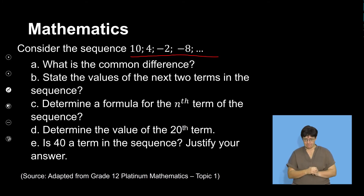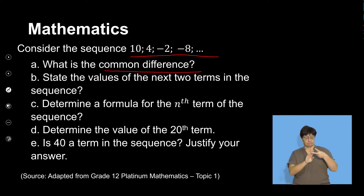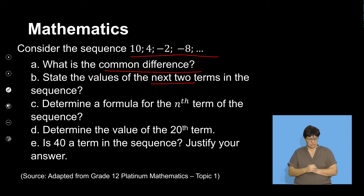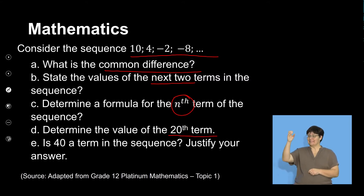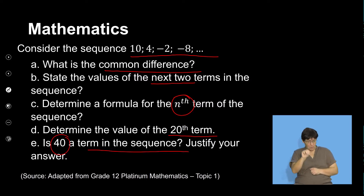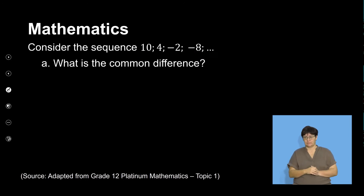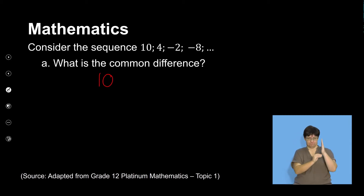Firstly, we've been asked what is the common difference. We're then asked to state the values of the next two terms in the sequence. C is asking me to determine a formula for the nth term. D is asking me to determine the value of the 20th term. And E is asking if 40 is a term in the sequence, and we need to justify why it is or why it is not.